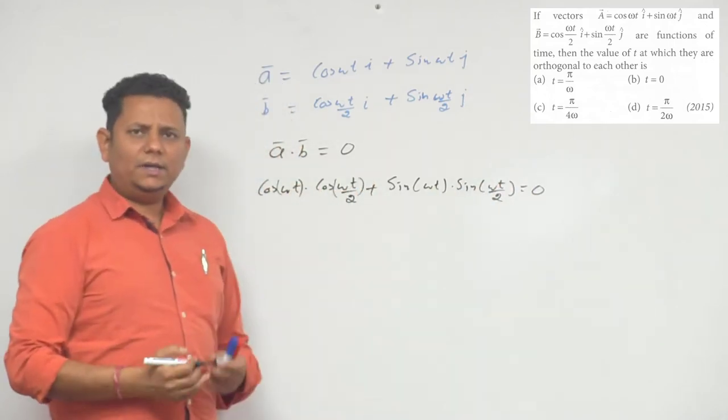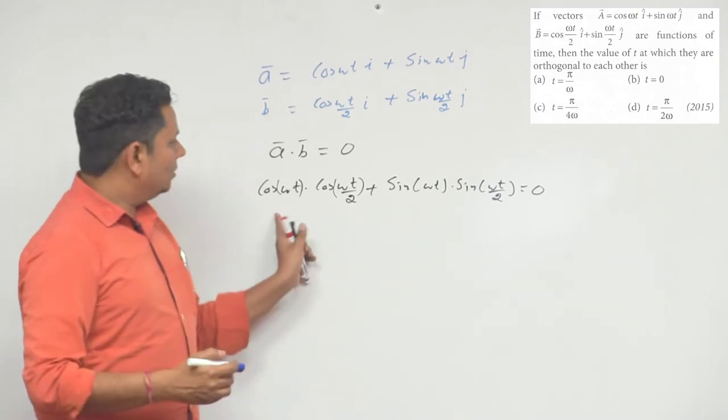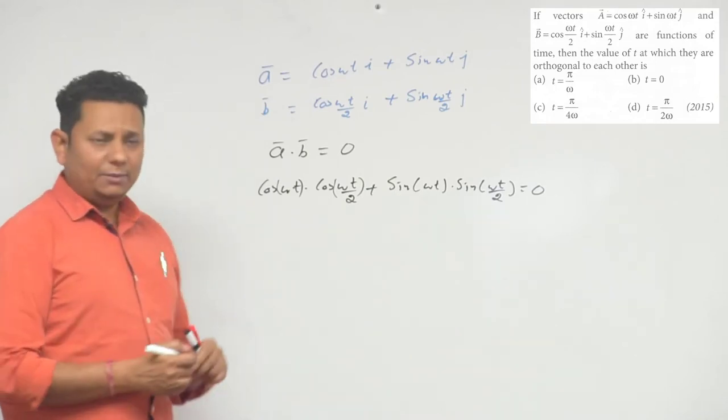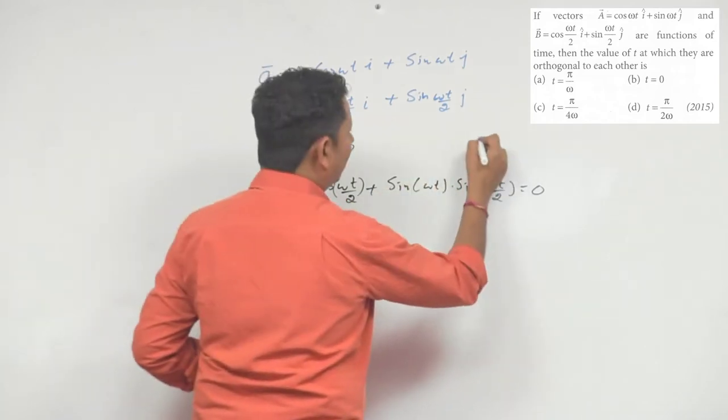This will be the condition अपने orthogonal बनी के लिए. Now, अपने को ये पता है कि cos a b plus sin a b is equal to cos a minus b. तो इसको हम लिख सकते हैं अपने को एक property है जो mathematical property पता होनी चाहिए.